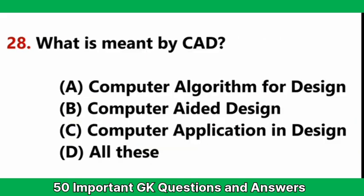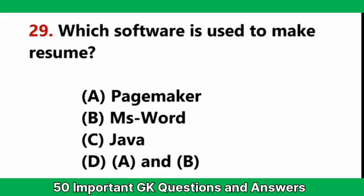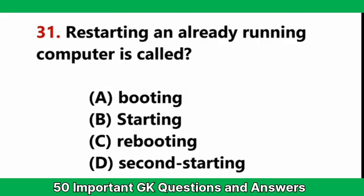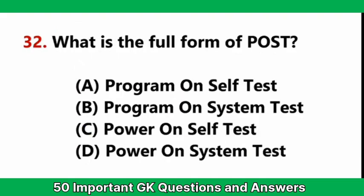What is meant by CAD? — Answer B: Computer Aided Design. Which software is used to make a resume? — Answer D: both PageMaker and Microsoft Word. Microsoft Word is an example of — Answer A: application software. Restarting an already running computer is called — Answer C: rebooting. What is the full form of POST? — Answer C: Power On Self-Test.